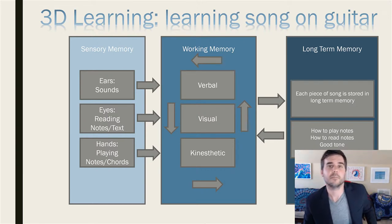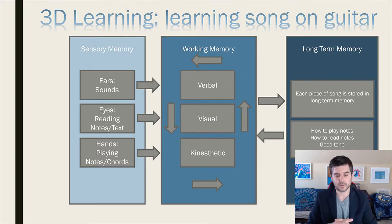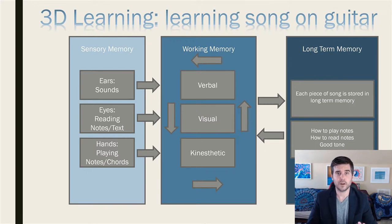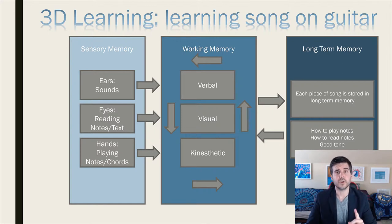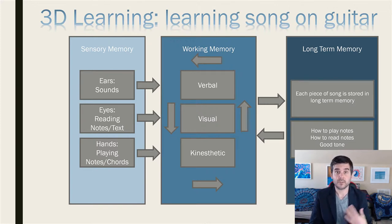3D learning is a multi-sensory learning theory about how we learn, what happens in our mind when we're actually learning, what happens when we're doing anything. It's an extension of a lot of the dual coding, dual channel methodologies - learning theories like dual coding, cognitive theory of multimedia learning, and cognitive affective theory of multimedia learning - and it adds to that multi-sensory learning literature base.